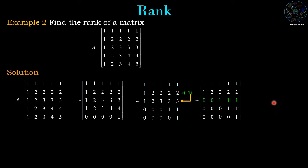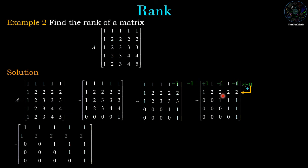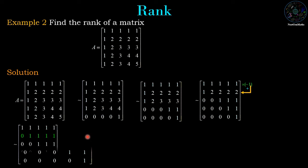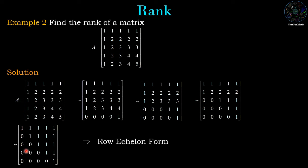In the next operation we multiply row 1 by minus 1 and add it to row 2. The result gives row 2 as 0, 1, 1, 1, 1. This is the row echelon form of matrix A, and we have 5 nonzero rows, therefore the rank of matrix A is 5.